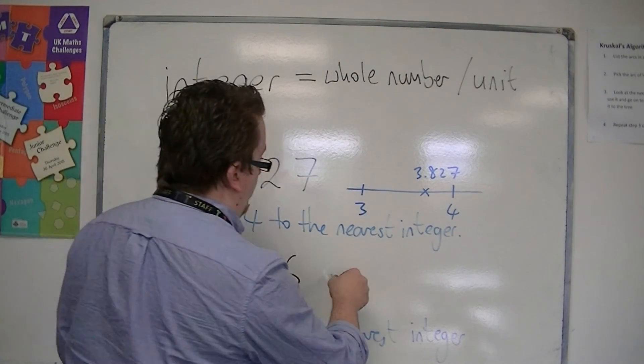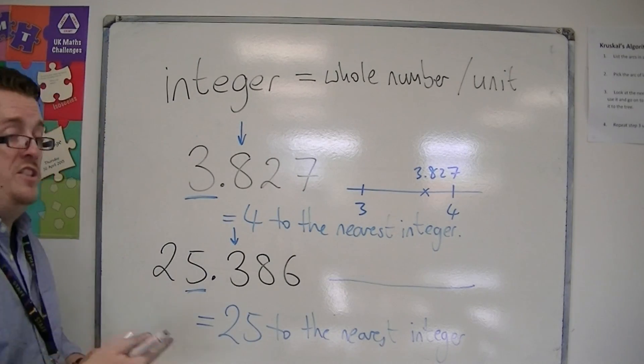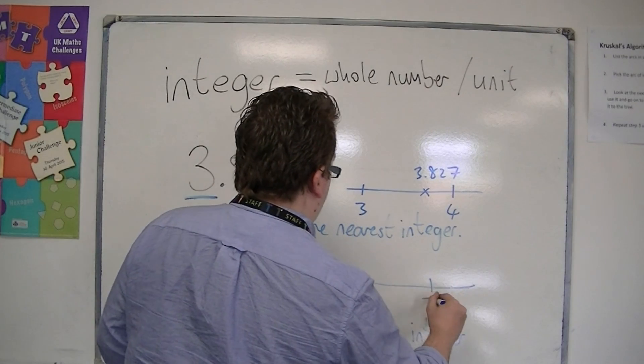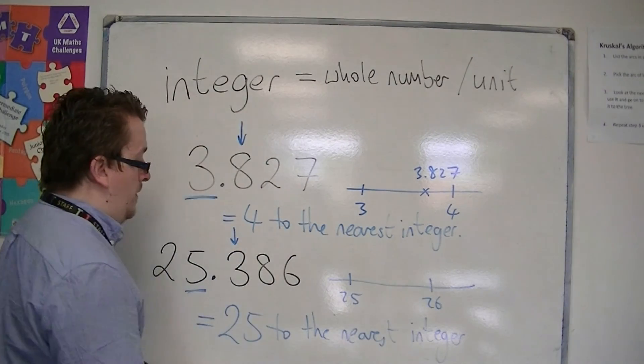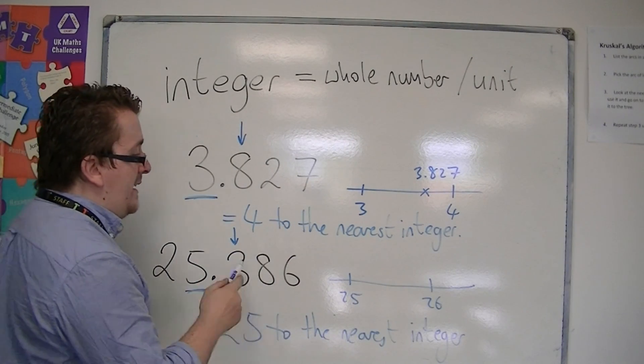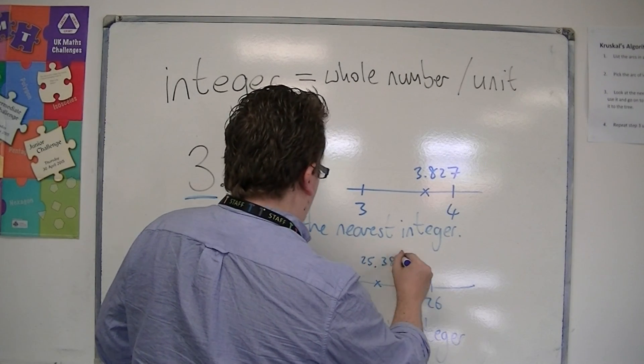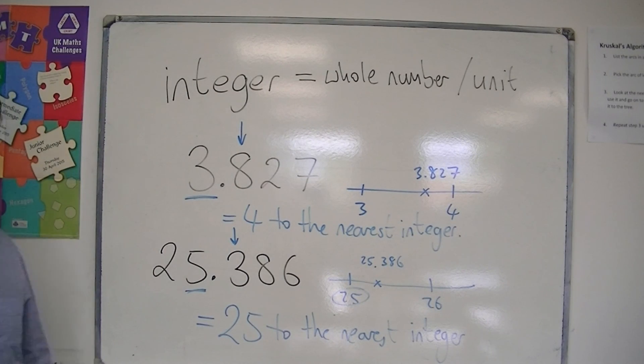Identifying this on a number line, I've split up into units. I have 24, 25, 26, 27, 28, etc. 25.386 is roughly about there. You can see that it is closer to 25 than to 26.